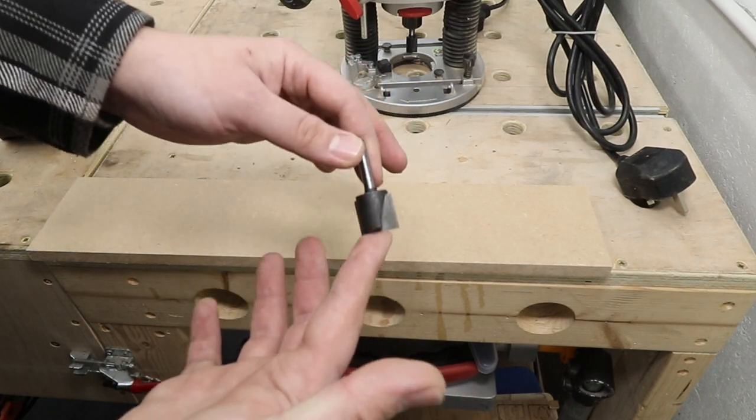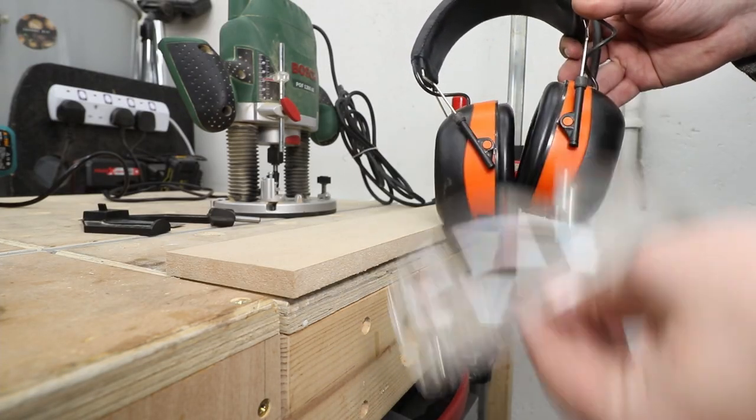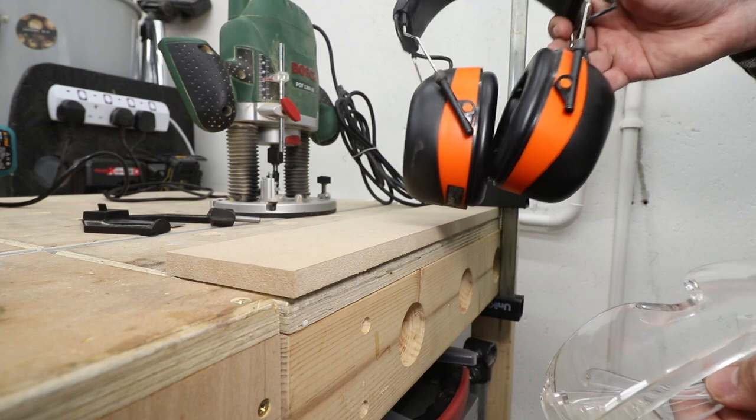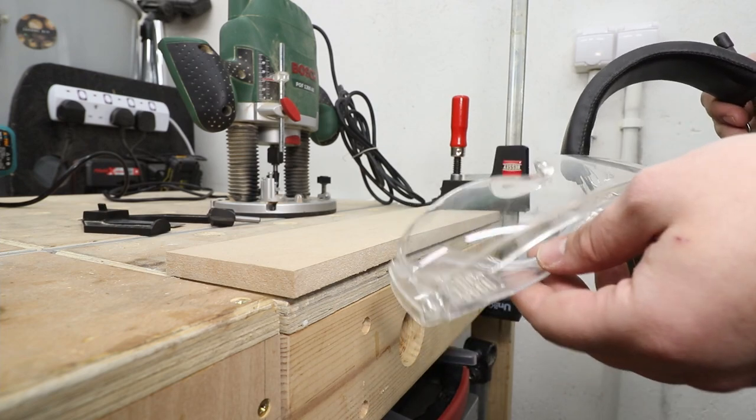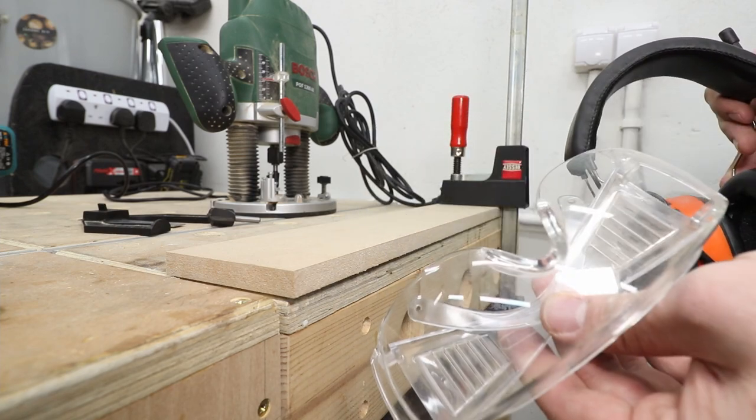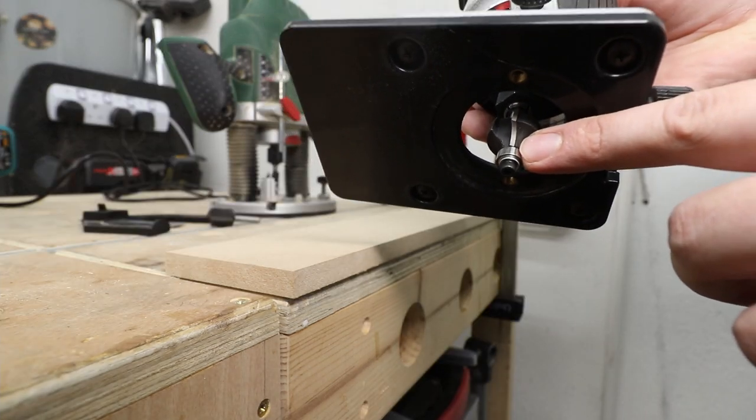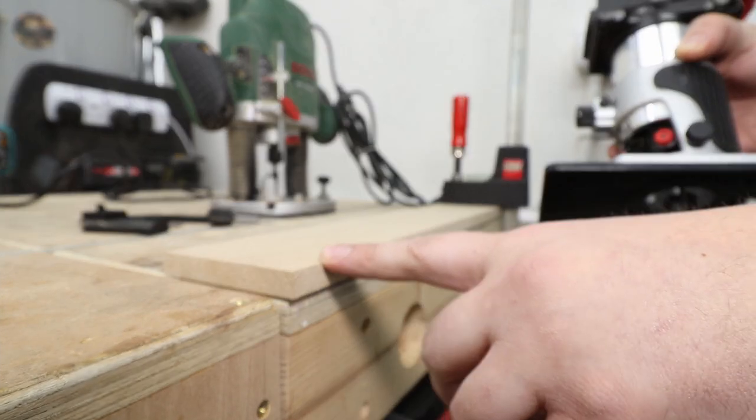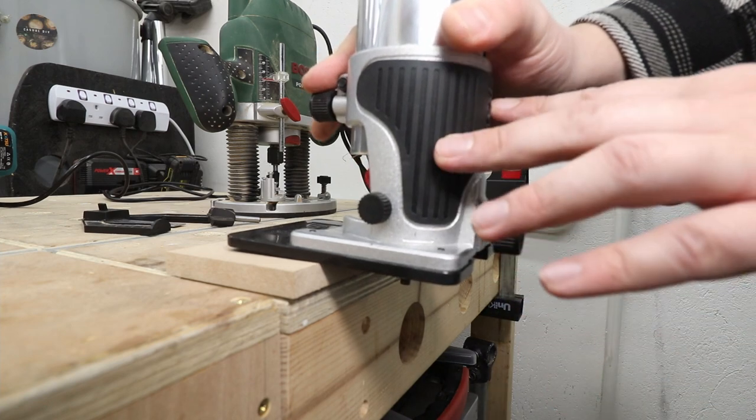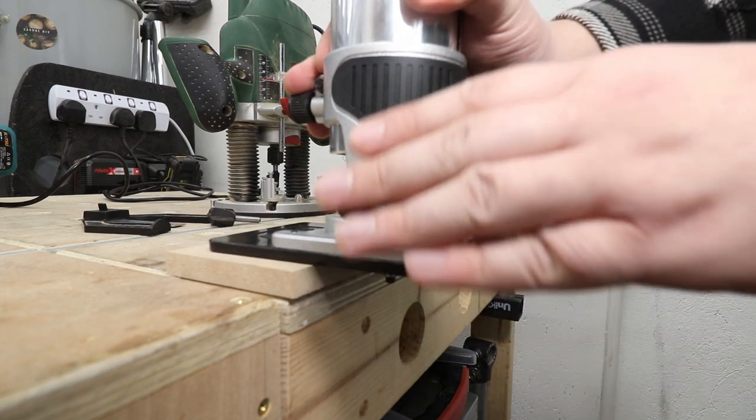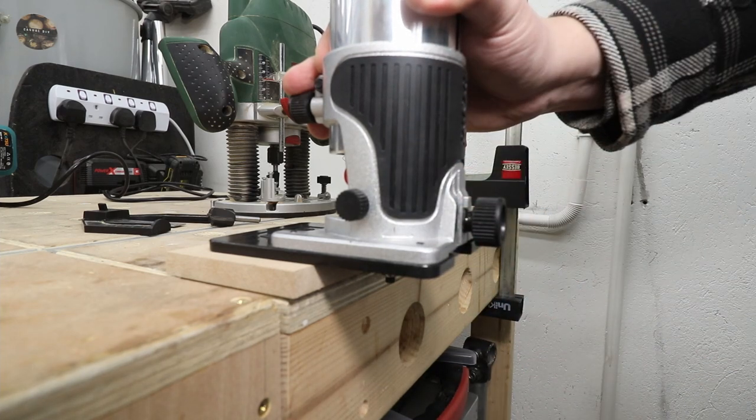Before making any cuts with your router, wear some eye protection and some hearing protection. Some of the routers can be very loud and obviously chips flying everywhere can damage your eyes. Make sure you are safe before you operate the machine. I'm going to be adding a small round over on this edge of this MDF board. As I mentioned before, we are making a push cut—that's the safest way to operate this machine, going from left to right against the clockwise movement of your router.